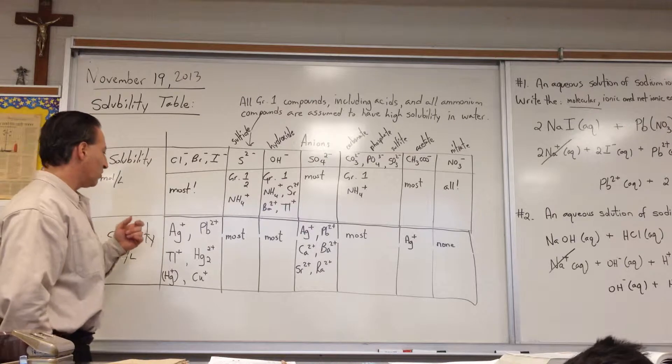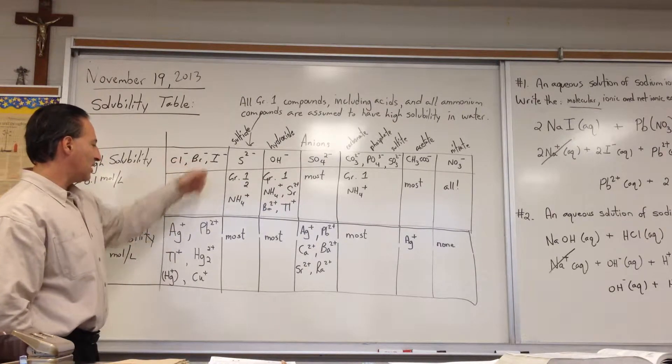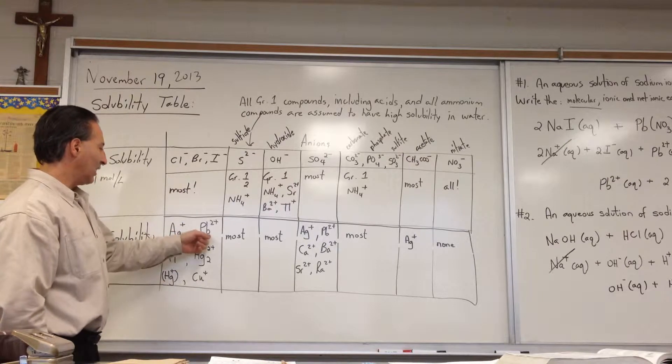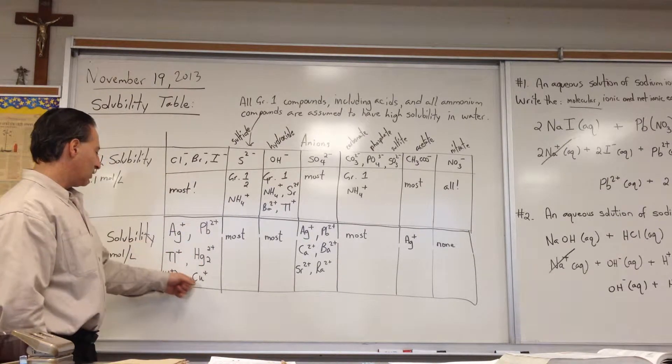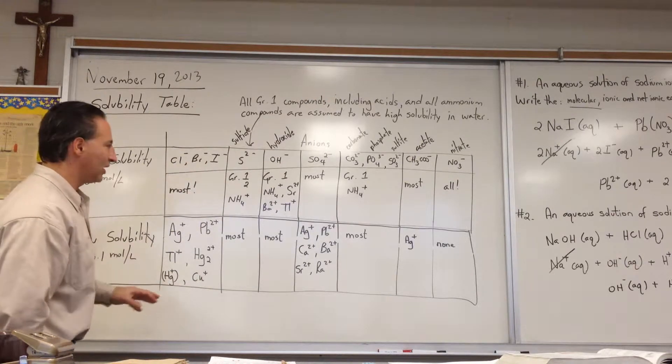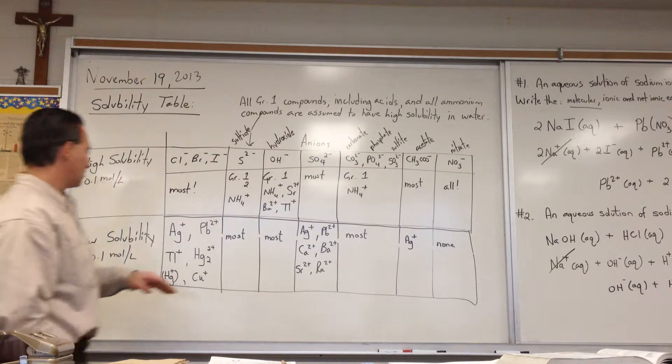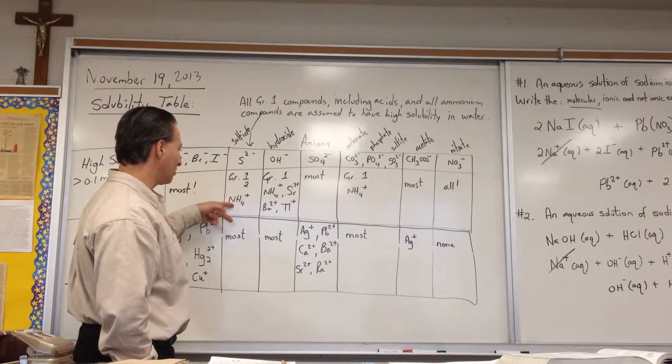Now, for low solubility, most silver salts of chloride, bromide, and iodides are insoluble. Lead salts, thallium salts, and mercuric and cuprous salts of chloride, bromide, and iodides are all insoluble. Most sulfides are insoluble, with the exception of group 1, group 2, and ammonium.